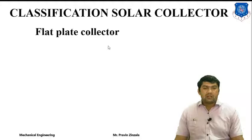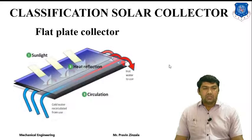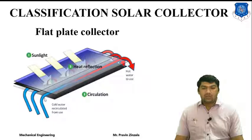Now we will discuss step by step the different types of collectors. The first is the flat plate collector, which is generally used for normal applications such as space heating, space cooling, solar refrigeration, and air conditioning. This is the basic construction of the flat plate collector. Whenever we supply cold water from one side, we get hot water from the other side. If we require space heating or space cooling, we can also supply air from one side and get warm air from the other side.